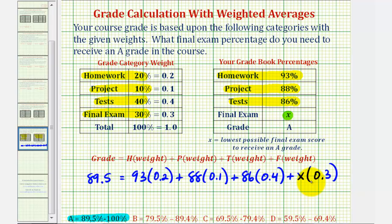So now if we solve this equation for X, we can determine the lowest possible final exam score to receive an A grade in the course. Let's go ahead and take this equation over to the next slide and solve for X.